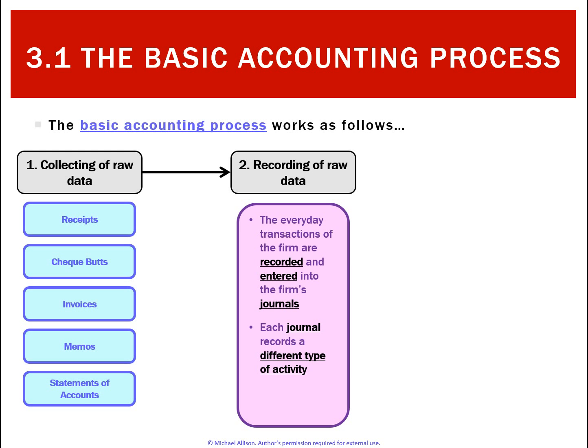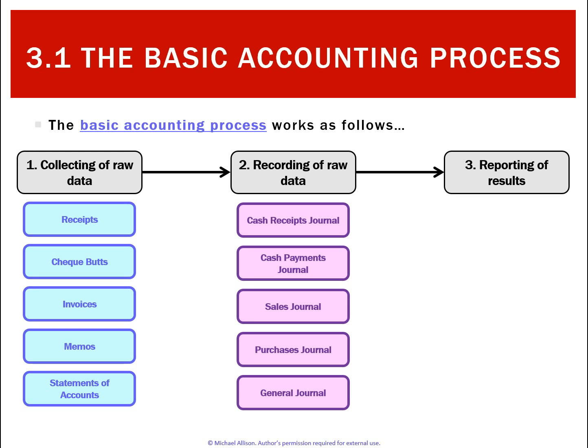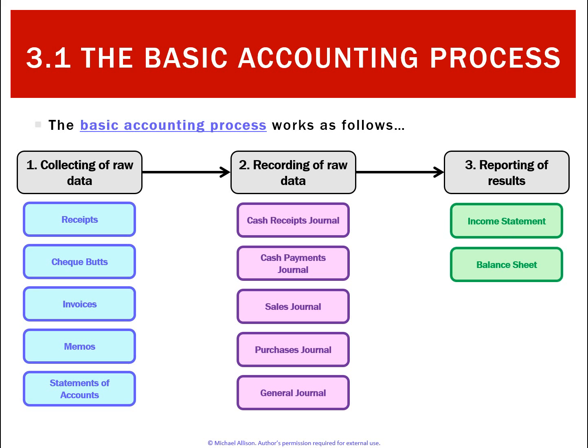Each journal records a specific type of activity, so all the cash receipts will go in one journal and the cash payments in another — we'll cover that in time. There are five journals in total. The point of doing all this is that we'll report our results: after all transactions have happened and we've recorded them, we'll calculate all the totals and put them into an income statement, a balance sheet, and a cash flow statement.